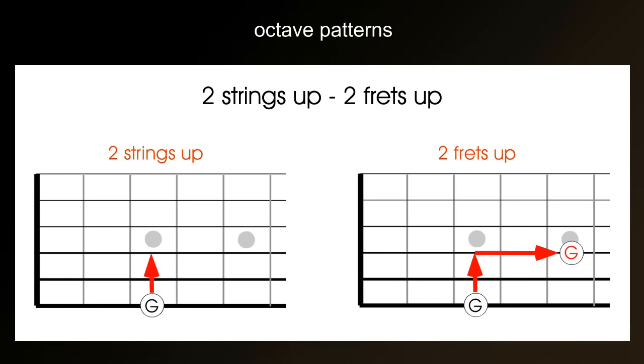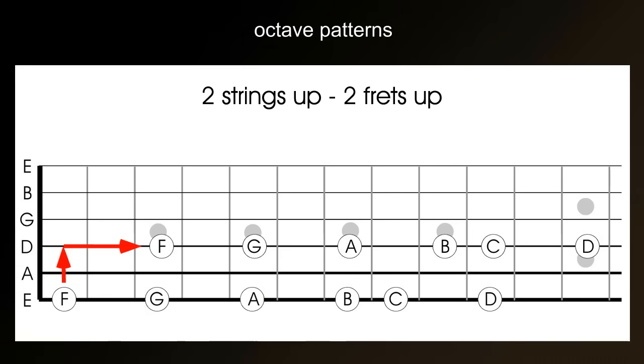For example, here, the G, which is the third fret on the bottom E string, repeats an octave up, which is the fifth fret on the D string. And this rule is true of any of the notes on the bottom E string.